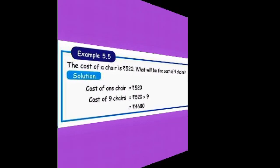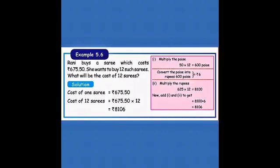Example 5.6. Rani buys a saree which costs rupees 675.50. She wants to buy 12 such saris. What will be the cost of 12 saris? They are giving cost of 1 saree, we want to find for 12 saris. So we will see the solution now.